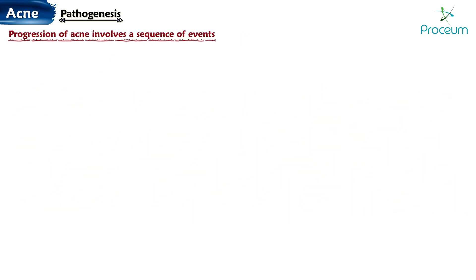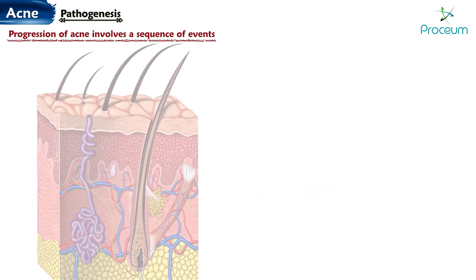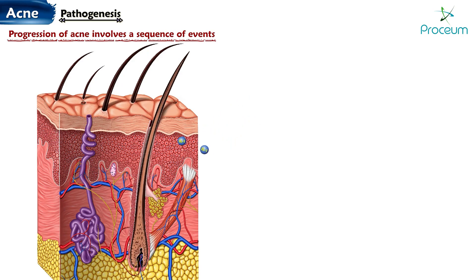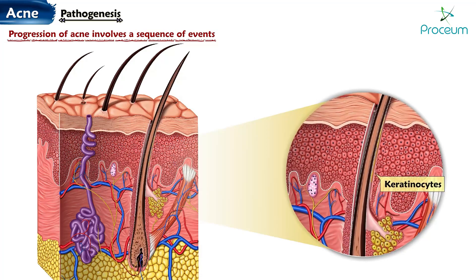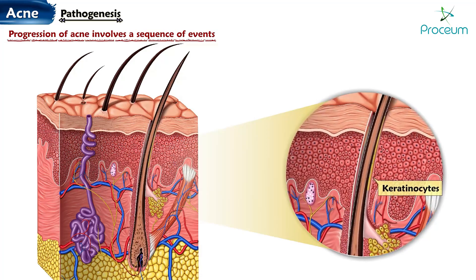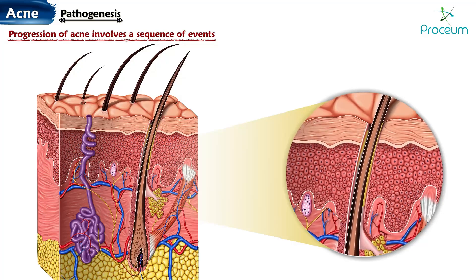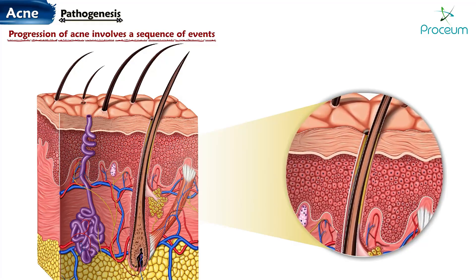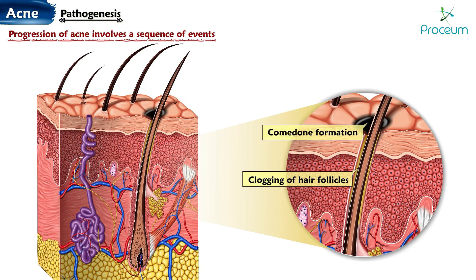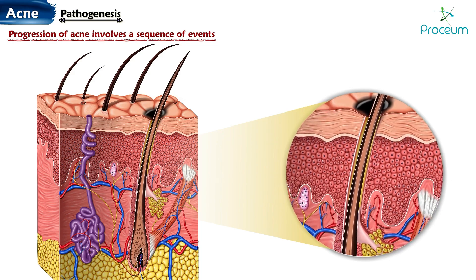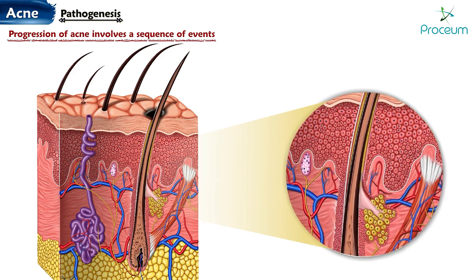The progression of acne involves a sequence of events. The process begins with the secretion of interleukin-1, which triggers the activation of keratinocytes — the cells that make up the outermost layer of the skin. Elevated interleukin-1 levels lead to increased keratin production. This surplus keratin contributes to the clogging of hair follicles, creating a conducive environment for comedone formation, which are the initial non-inflammatory lesions, often called blackheads or whiteheads. The upper part of the follicle becomes obstructed by the comedone.